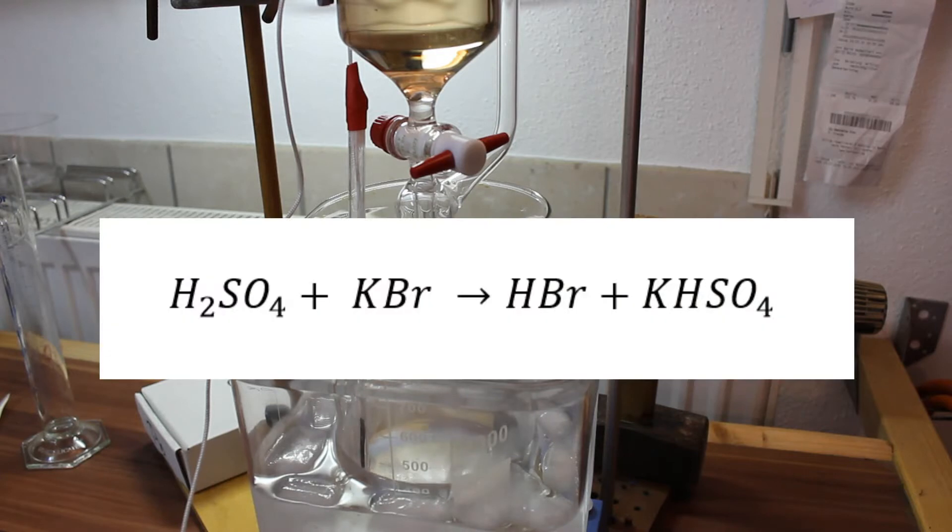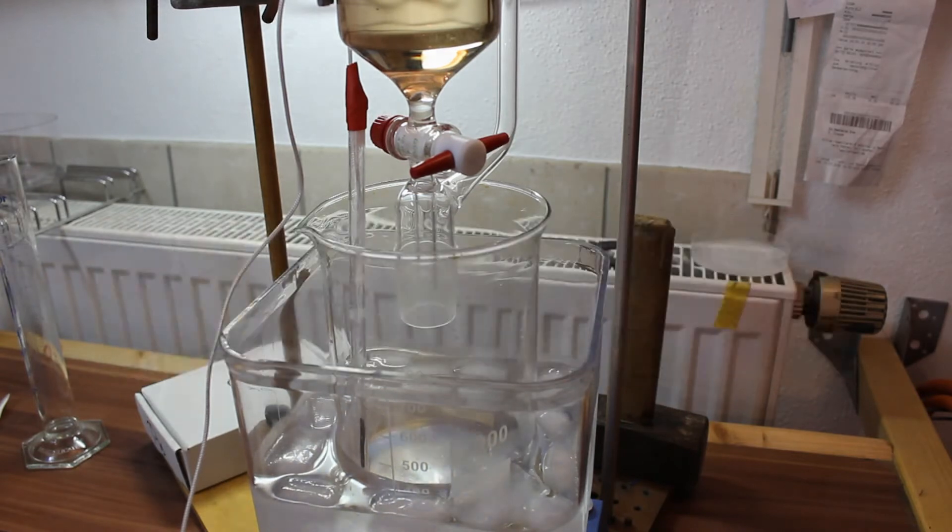What is essentially happening once we add it? Well, the stronger acid is able to free the weaker or in this case more volatile acid from its salt form. So essentially we're forming potassium hydrogen sulfate and our hydrobromic acid.